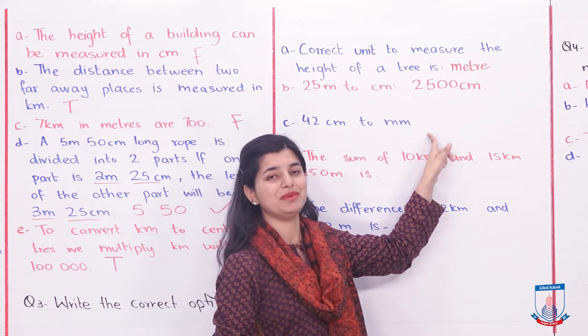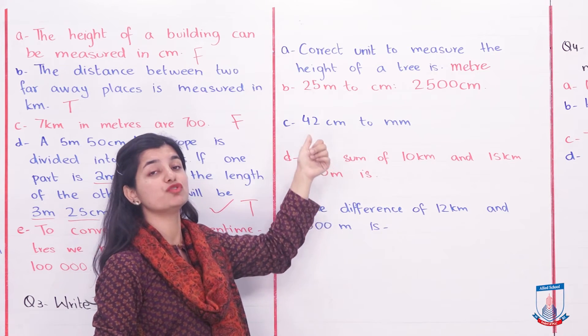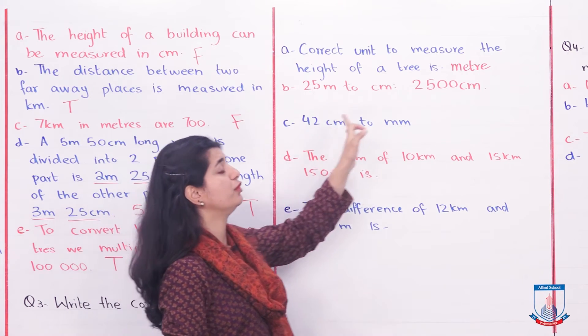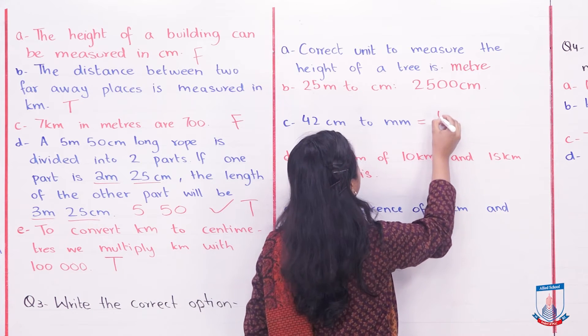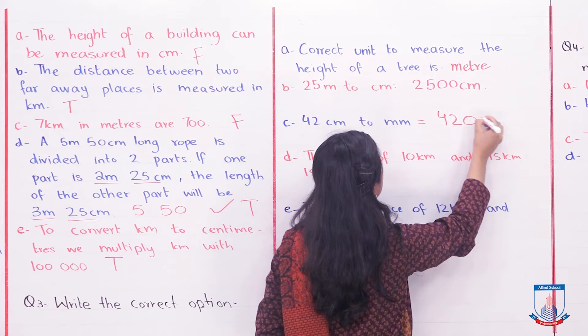Part C: 42 centimeters to millimeters. We have to multiply big to small, and this is 10. So our answer is 420 millimeters.